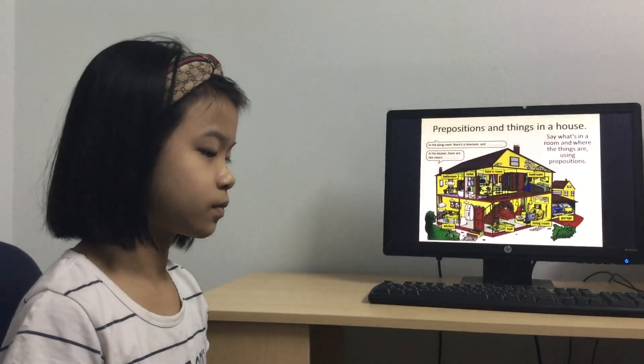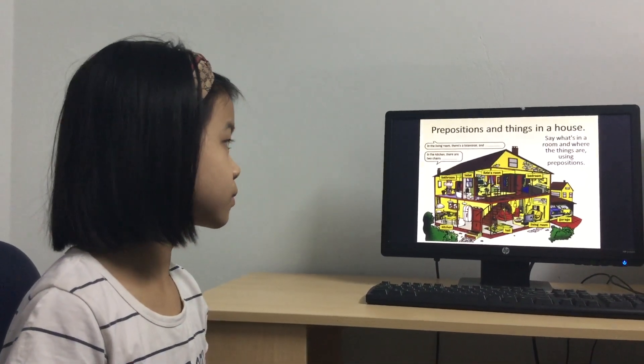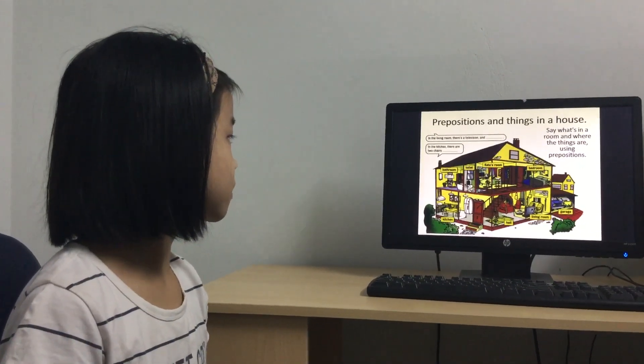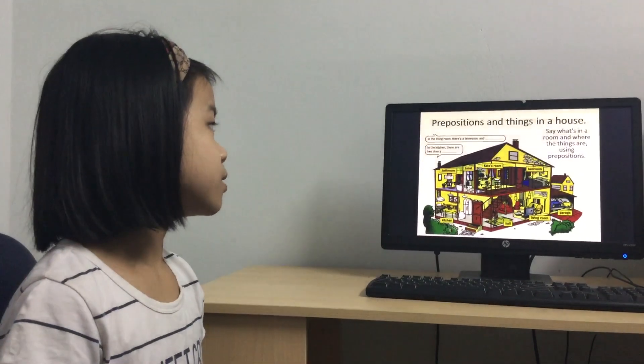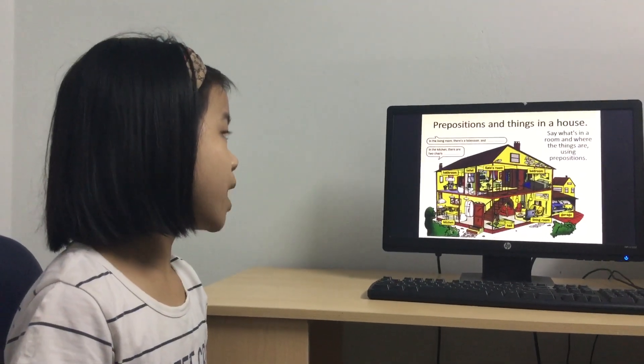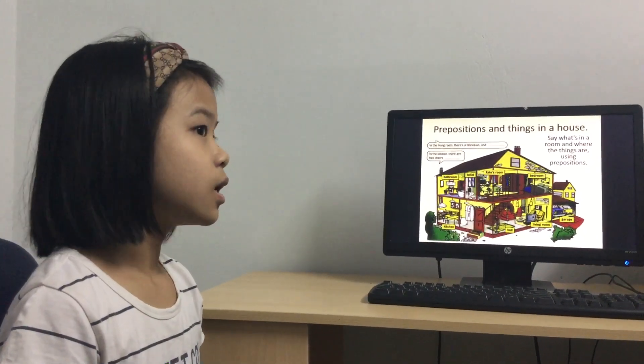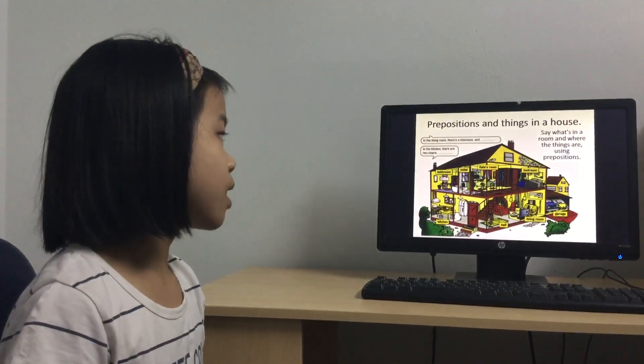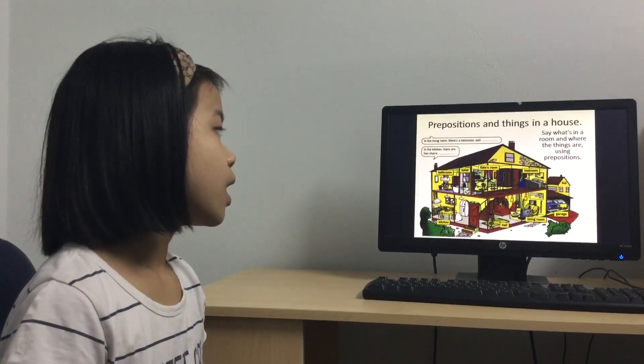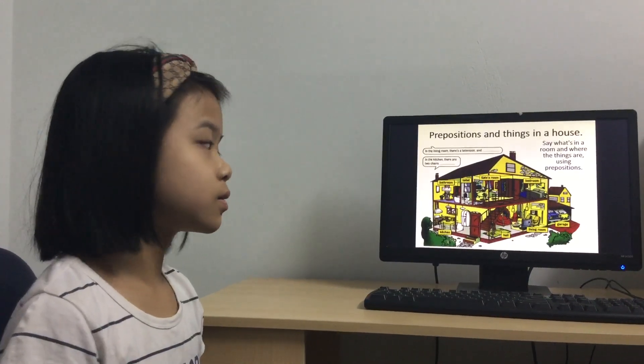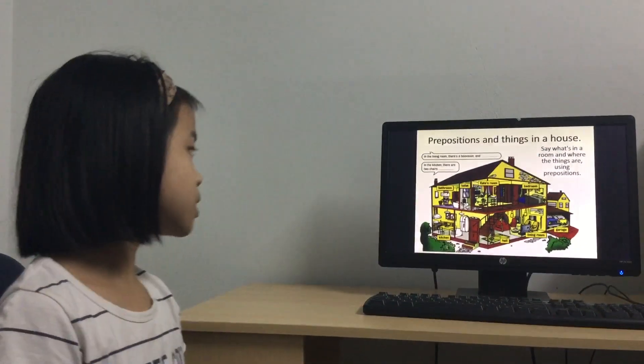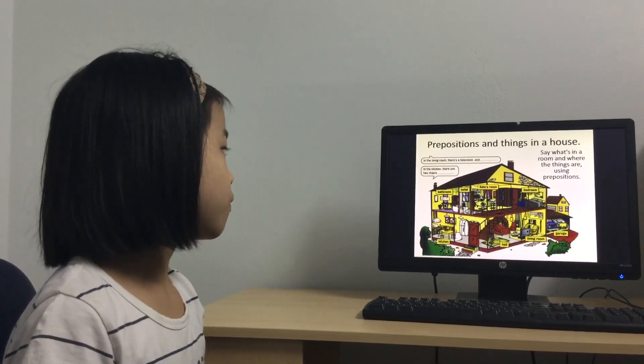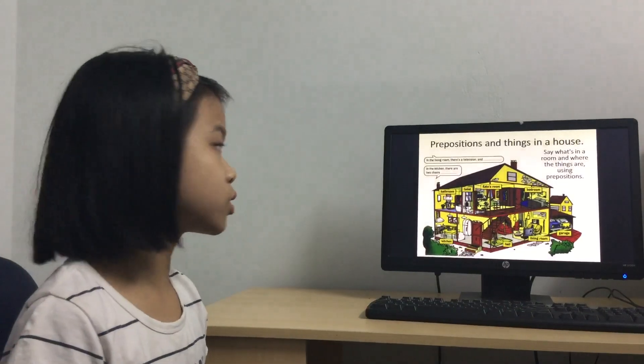And now prepositions and things in the house. Can you tell me what is in the bedroom? In the bedroom there's a bed next to the lamp. What is in the living room? In the living room there's a TV next to the lamp. What is in the kitchen? In the kitchen there's a fridge next to the cupboard.